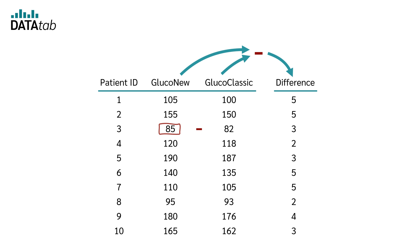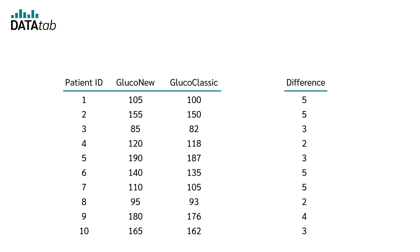And then we need to calculate the mean of the paired values. 105 plus 100 divided by 2 is 102.5, 155 plus 150 divided by 2 is 152.5, and so on.